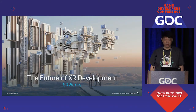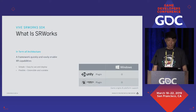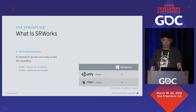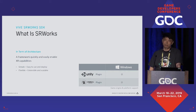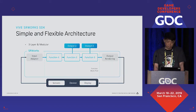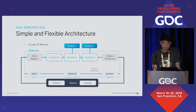Let's start from SRWorks. What is SRWorks? In terms of architecture, it is a framework able to quickly and easily enable your application with SR capability. It must be very simple to use and flexible to extend. Currently, it supports Unity and Unreal plugins on the Windows platform. This is a generic architecture — very simple, with only three layers: input, process, and output.